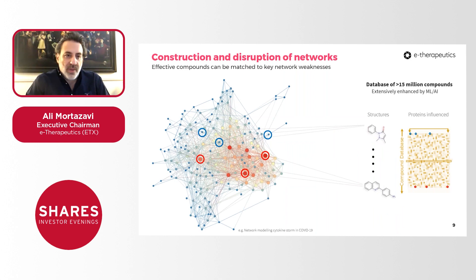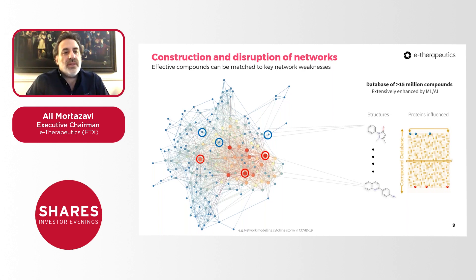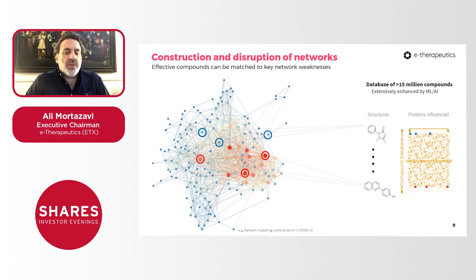Zooming into one of the process boxes: on the left-hand side is our best representation of the protein interactions and network effect of the cytokine storm within COVID-19. On the right-hand side is our database of approximately 15 million small molecule compounds. The idea is that if this network is a fair reflection of a cytokine storm, we want to find compounds from that database which can disrupt — or ideally destroy — it.